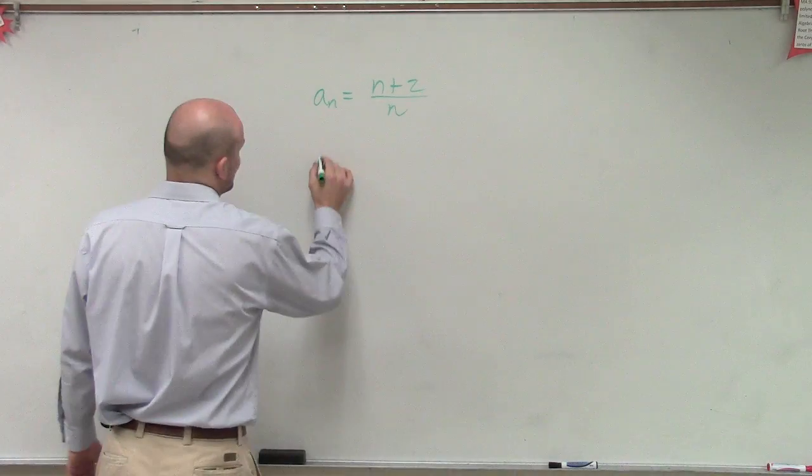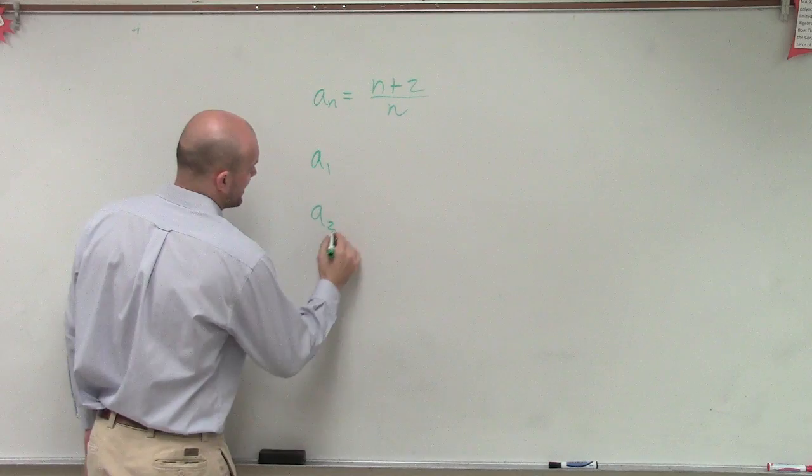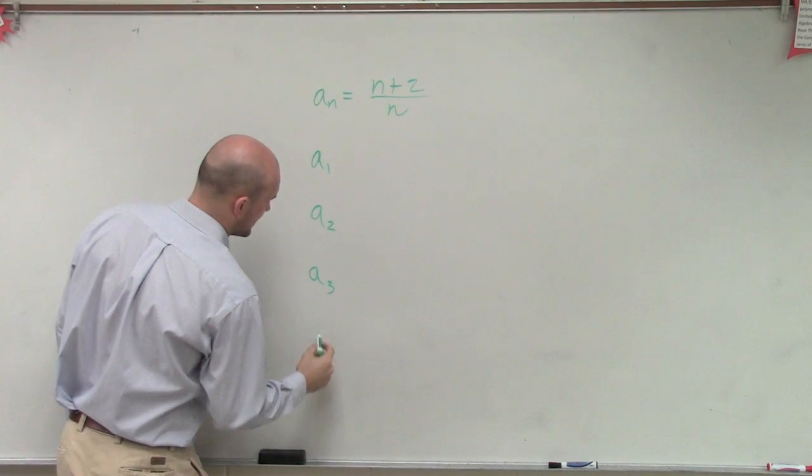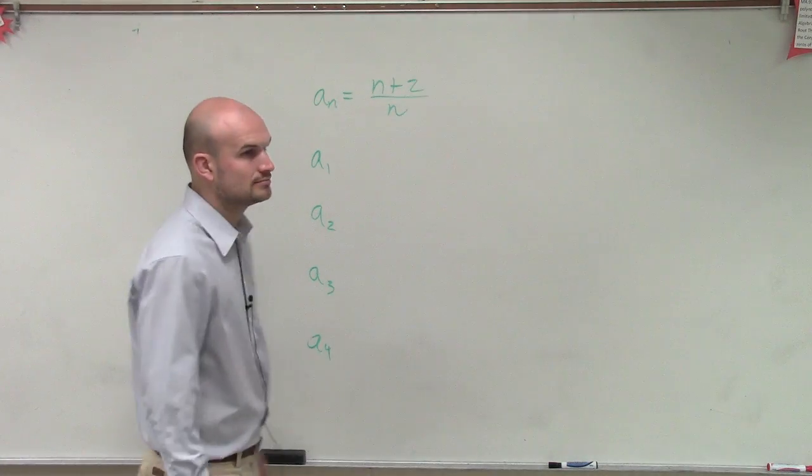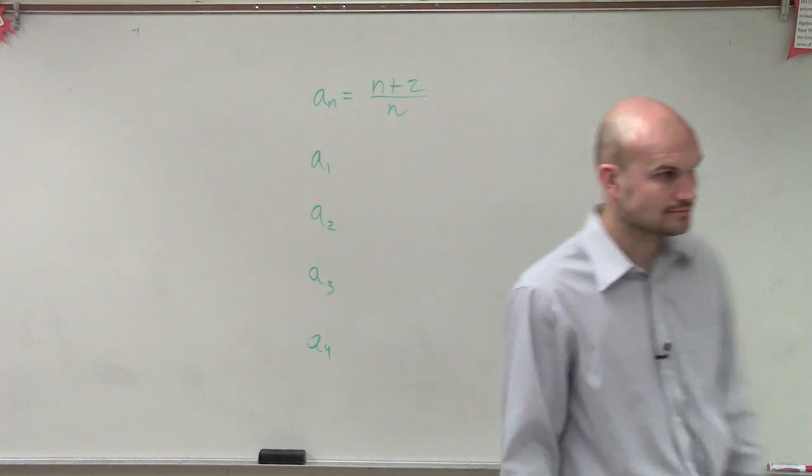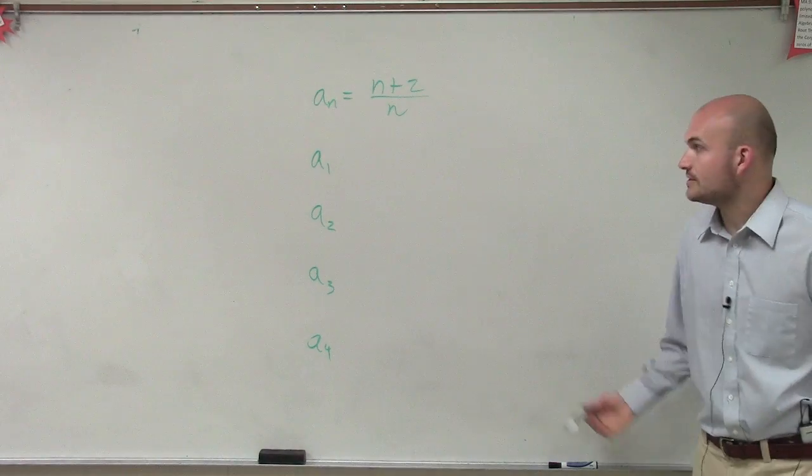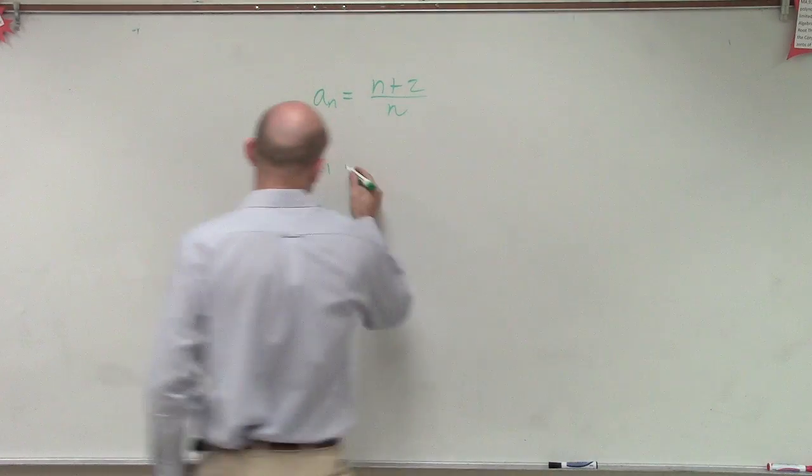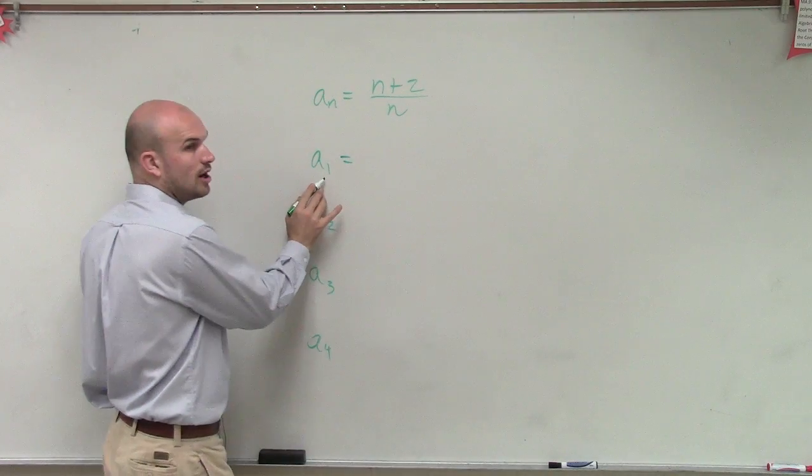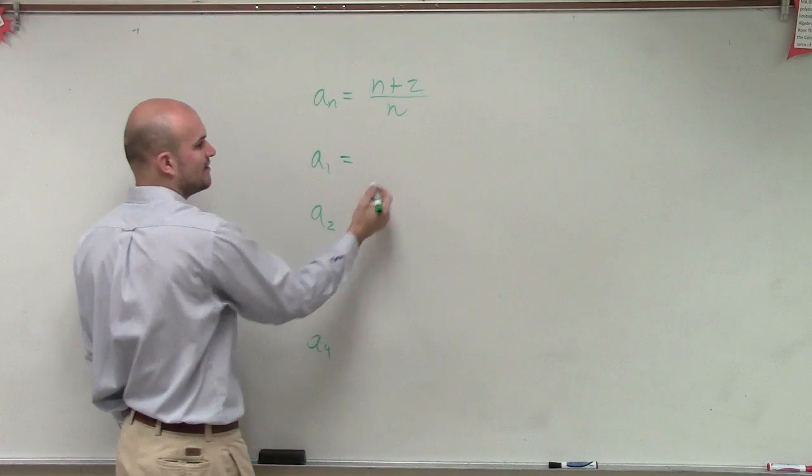So what they want us to do is find a_1, a_2, a_3, and a_4. All we're simply going to do to find those first four terms is just plug in what term number we have in for our variable.